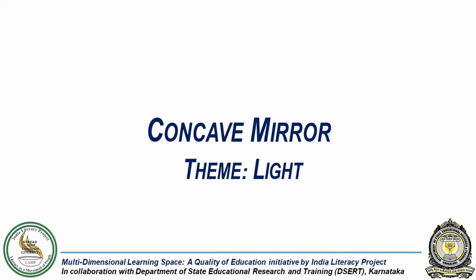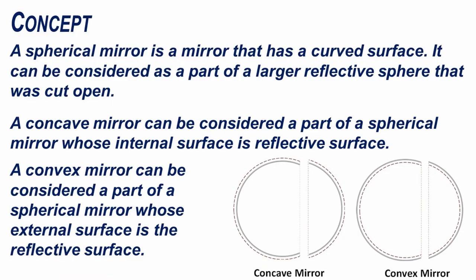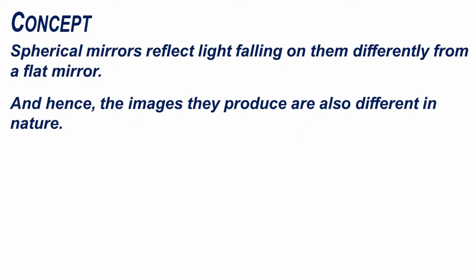In this experiment, we will see how light behaves when it is reflected off a concave mirror. A spherical mirror is a mirror that has a curved surface. It can be considered as a part of a larger reflective sphere that was cut open. A concave mirror is a part of a spherical mirror whose internal surface is the reflective surface, while a convex mirror uses the external surface. Spherical mirrors reflect light differently from a flat mirror, and hence the images they produce are also different in nature.